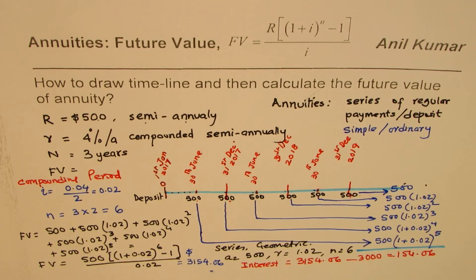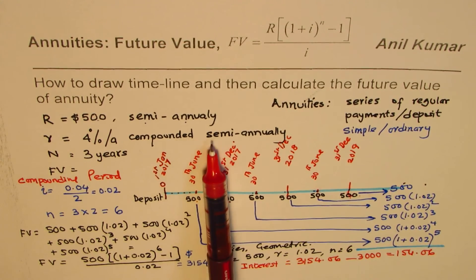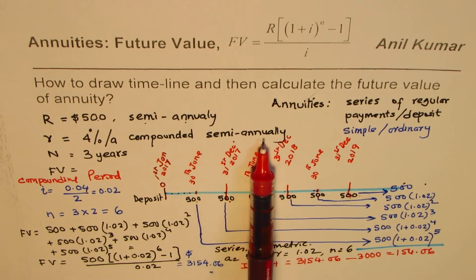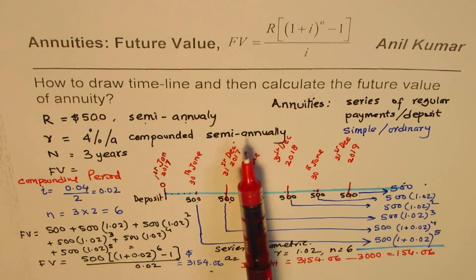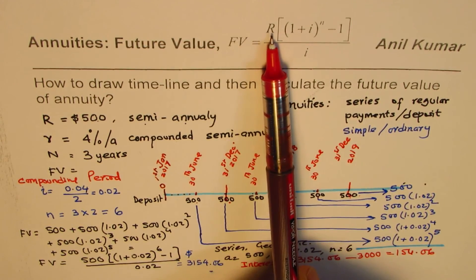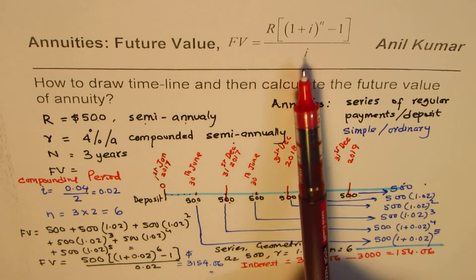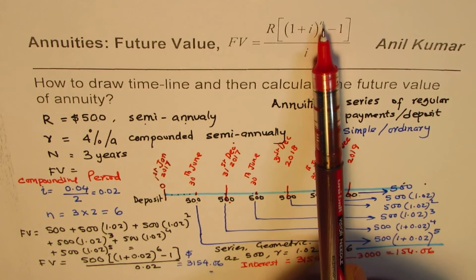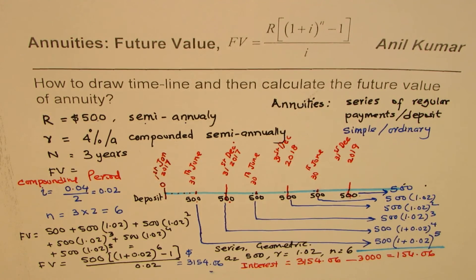This gives you a complete picture of how annuities work. In upcoming questions we'll change compounding periods — weekly (52 per year), quarterly (4 per year) — and also solve for R given a future value, find the interest rate, or find the time period. We'll have about 10 questions. I'm Anil Kumar — share and subscribe, and the only way to get this is practice. Thank you and all the best.